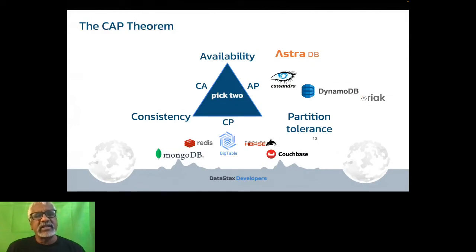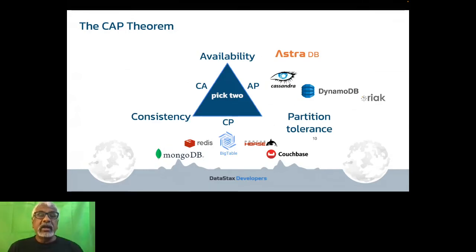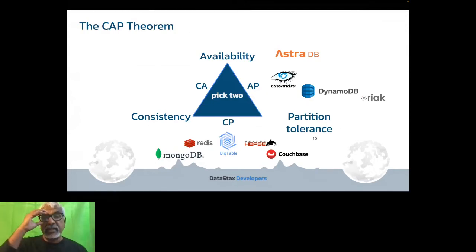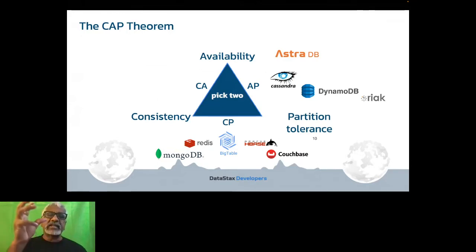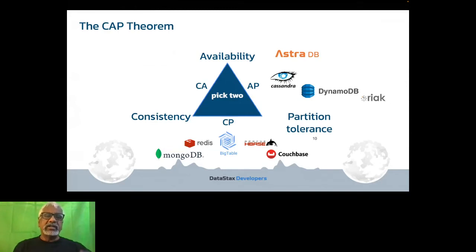You might have heard of the CAP theorem. What it states is that if you think about consistency, availability, and partition tolerance in a distributed system — when there is a failure, which is inherent in distributed systems — you cannot have all three properties at the same time. You have to sacrifice at least one. Sacrificing partition tolerance is worse than sacrificing consistency or availability. If it's not available for a few seconds or minutes, it's probably okay; if it's not consistent for a few seconds, it will eventually become consistent. But if you lose partition tolerance, even my grandmother can tell the data is inconsistent.